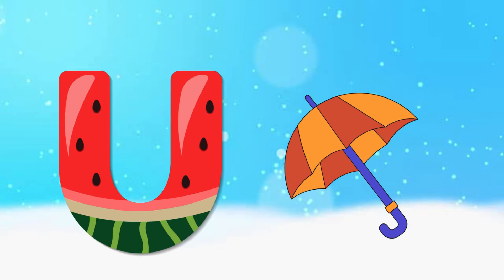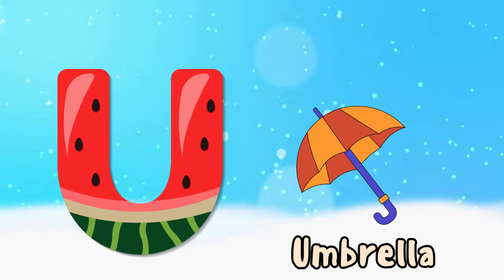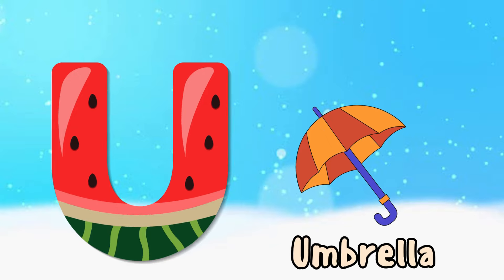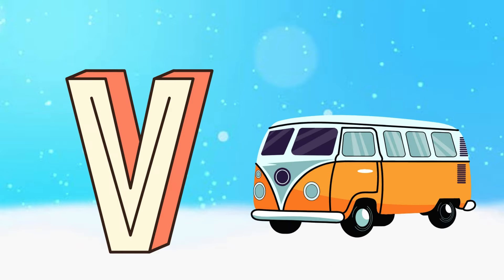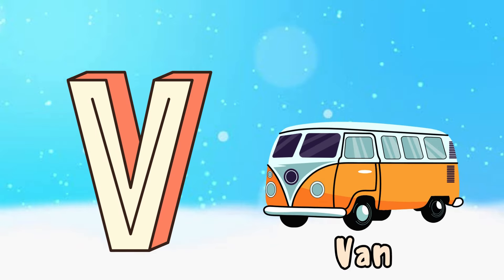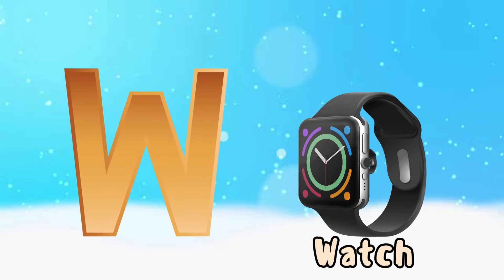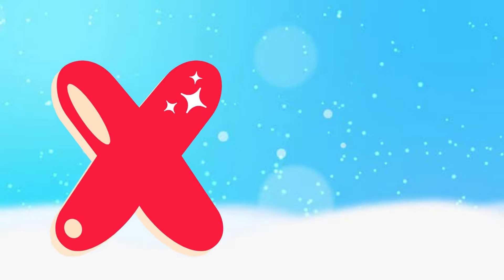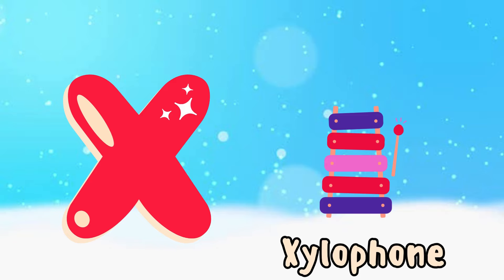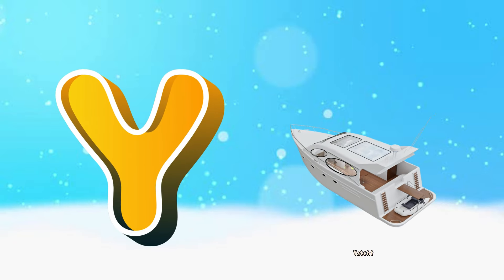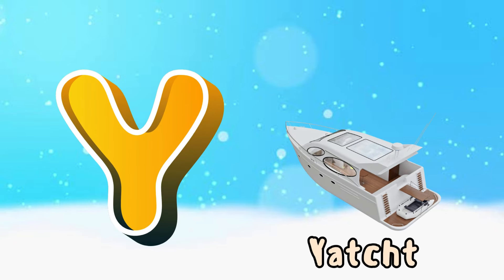U is for umbrella, u-u-umbrella. V is for van, v-v-van. W is for watch, w-w-watch. X is for xylophone, x-x-xylophone. Y is for yacht, y-y-yacht. Z is for zebra, z-z-zebra.